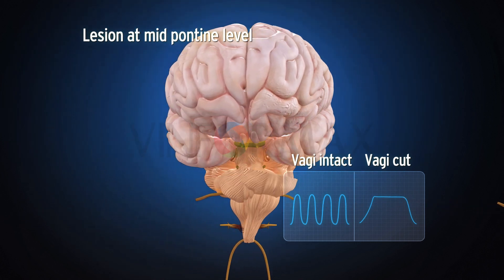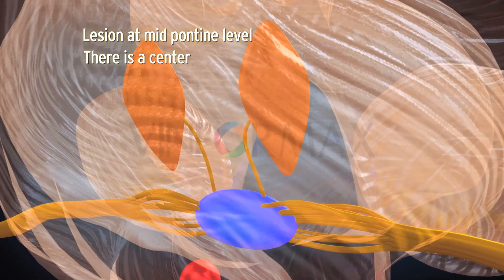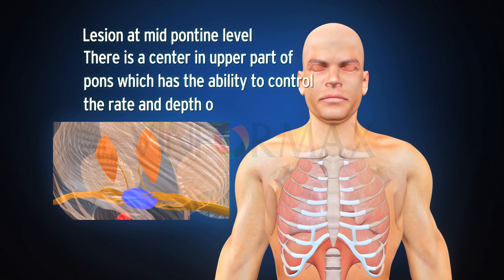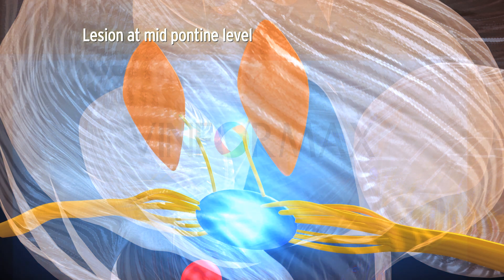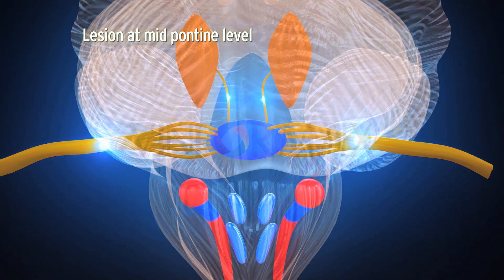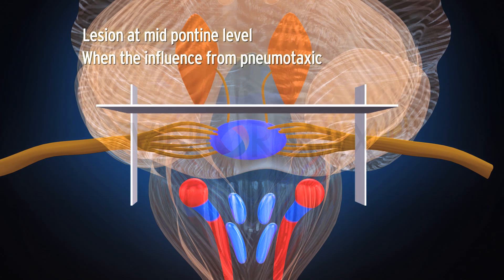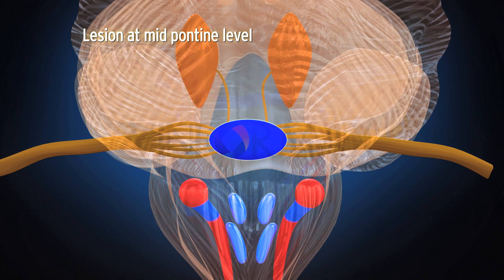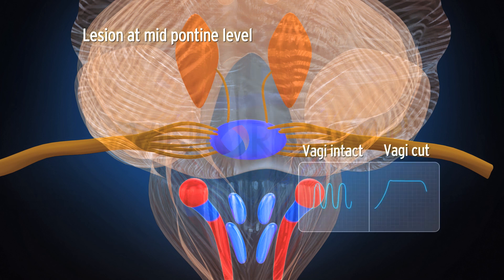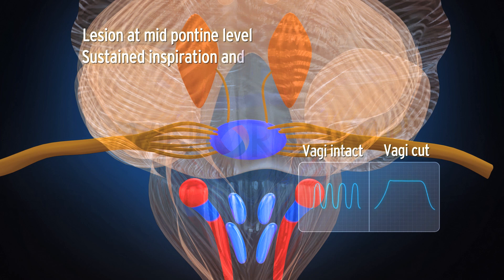It could be concluded that there is a center in the upper part of the pons which has the ability to control the rate and depth of respiration. The apneistic center present in the lower pons is under the influence of the pneumotaxic center in the upper pons as well as vagal afferent influences. When these influences are lost, there is no inhibitory influence acting on the apneistic center, causing the inspiratory center activity to continue for a long time, leading to sustained inspiration and sudden expiration.